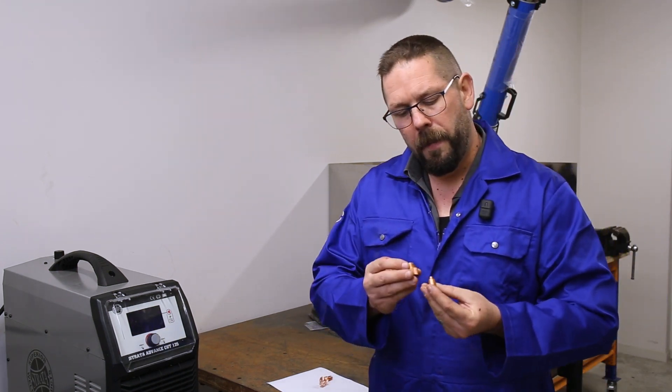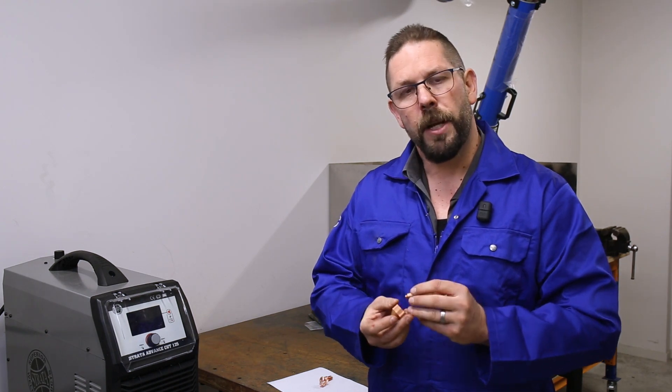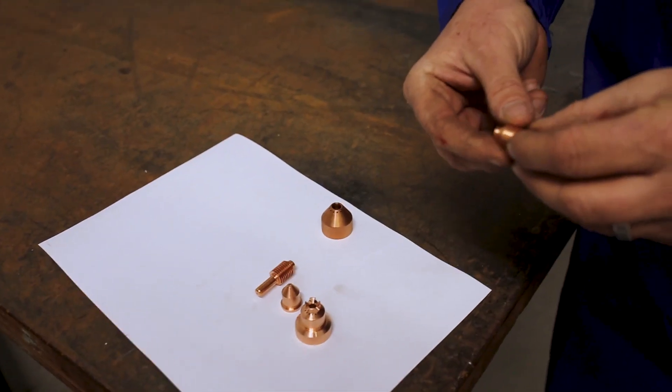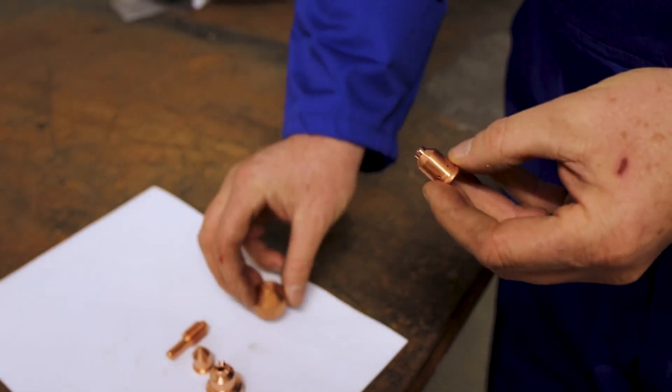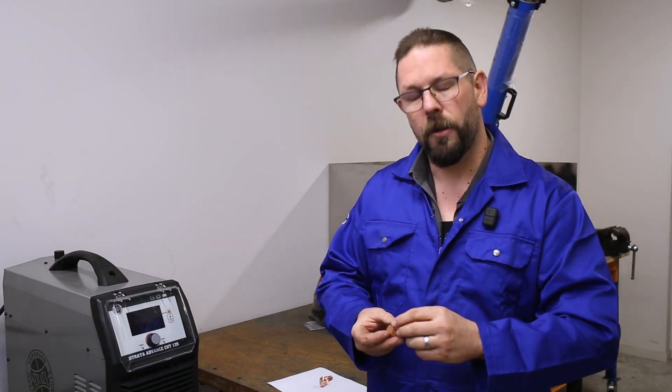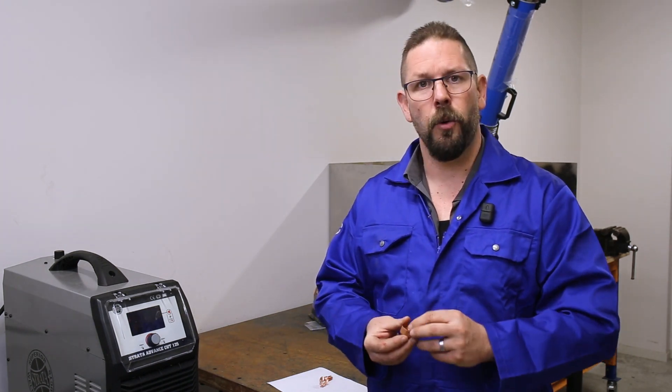Option number two is gouging gear. So we can crank the machine up, we can set it up at 100 to 125 amps, put the gouging tip and gouging shield on it, tip the torch on an angle and that's going to allow us to clear a lot of metal really fast. Great if you're working on machinery or trying to chop out an old weld.